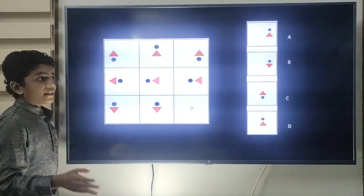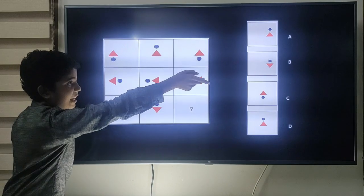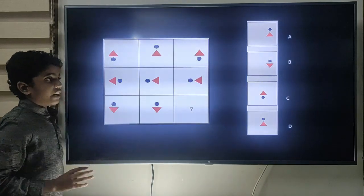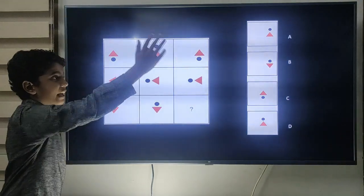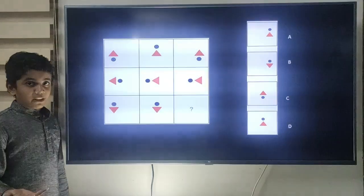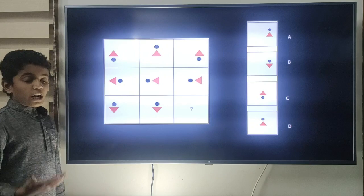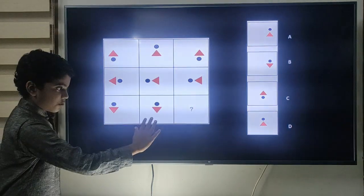Now look at the options. We have two options A and B. Both triangles are positioned towards the right side. Now we want to choose either A or B. To confirm it, we want to look at the last row.